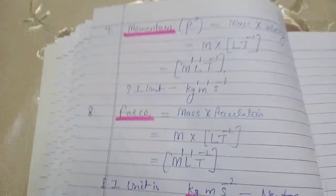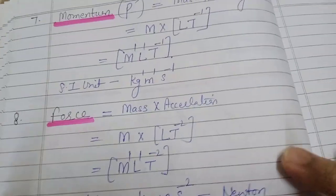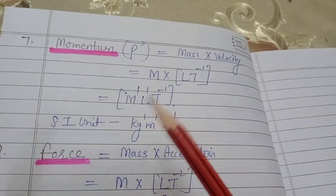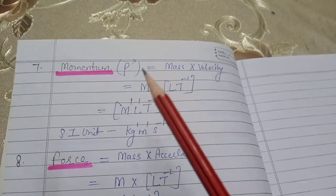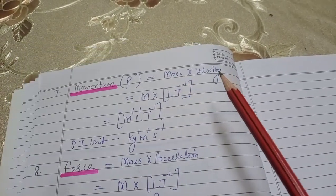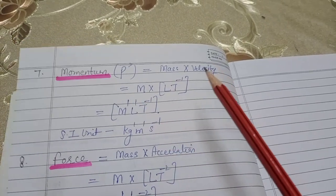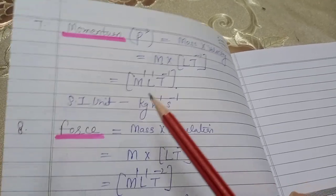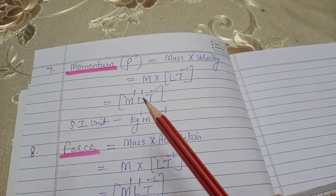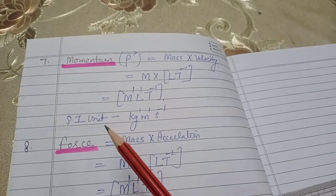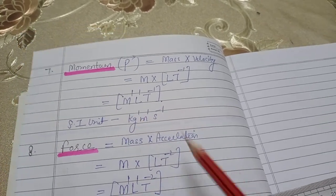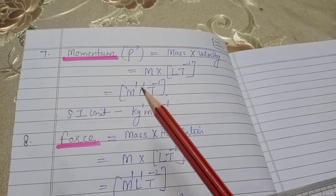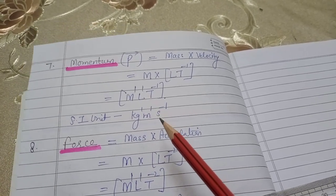Next is momentum। Momentum को P से denote करते हैं। Formula: mass × velocity। Mass का M, velocity का [M⁰L¹T⁻¹] put किया — collect करने पर M की power 1, L की power 1, T की power −1। Dimensional formula: [M¹L¹T⁻¹]। SI unit: kilogram की power 1, meter की power 1, second की power −1, यानी kg·m/s।